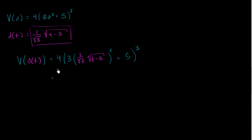This is going to be 4 times 3 times this whole thing squared. (1/√3)² is going to be 1/3, and then (√(t - 5))² is going to be t - 5. And then of course we have plus 5 to the third power.